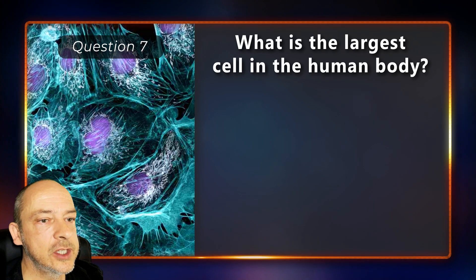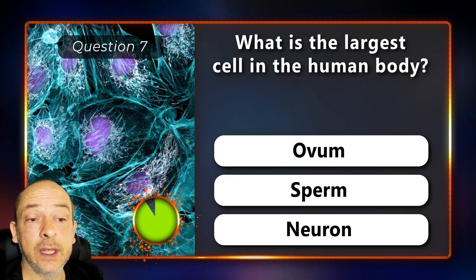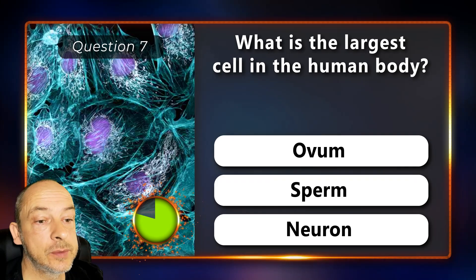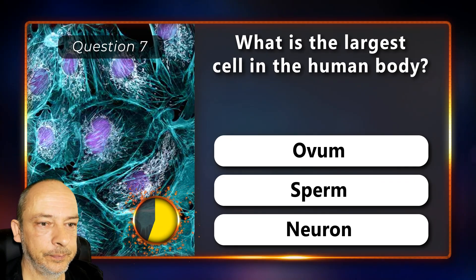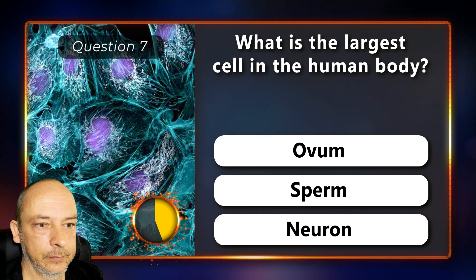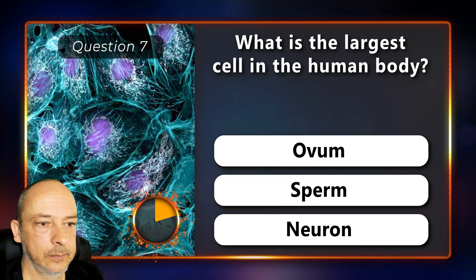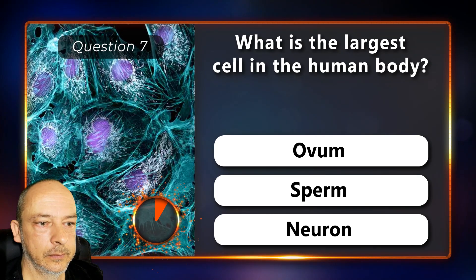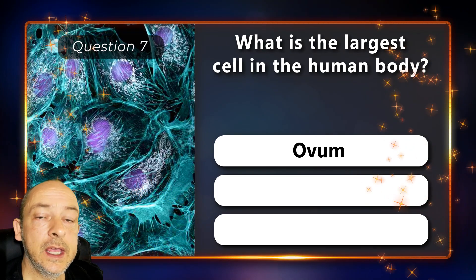What is the largest cell in the human body — is it the ovum, sperm, or neuron? And the answer is the ovum.